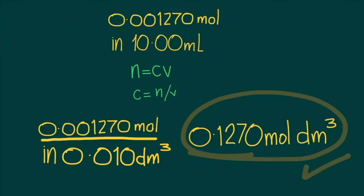We can use this information to show that the concentration of the unknown hydrochloric acid is 0.1270 moles per dm³.